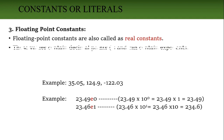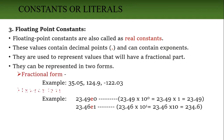Next, floating point constant. A floating point constant contains a decimal point. It has two parts: a real part and a fraction part. We also call these real constants. These values contain decimal points, or they may contain an exponent part. Floating point constants can be represented in two forms: fractional form and exponent form. Fractional form contains a simple decimal like 35.05 or 124.9.